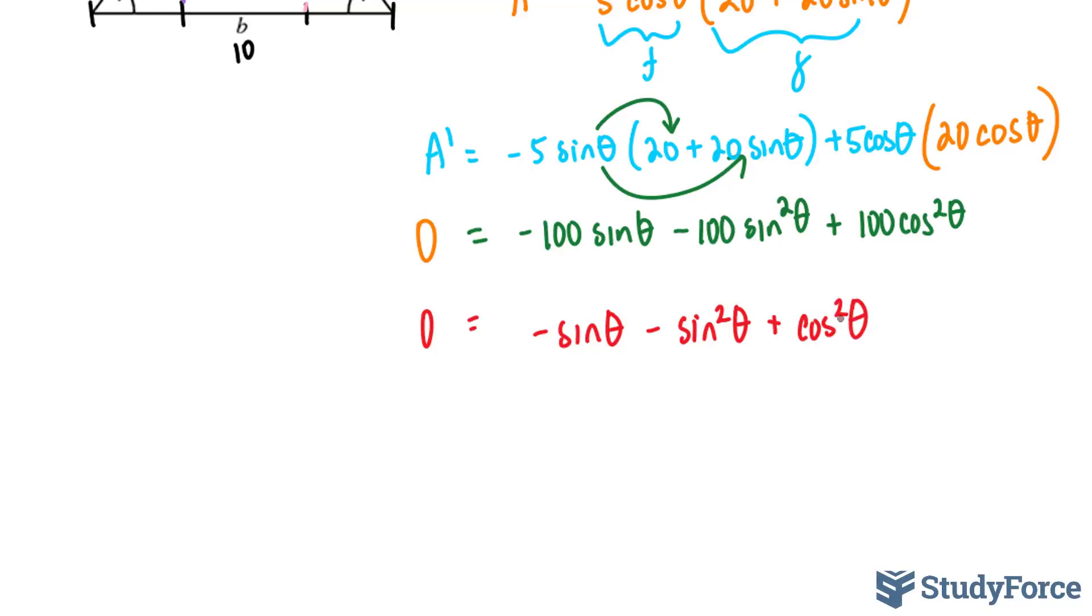Notice how we're getting closer and closer to solving for theta, which is what we want. The next step is to take this term over to the left side, and that makes it positive. And on the right side, we have cosine squared theta minus sine squared theta.